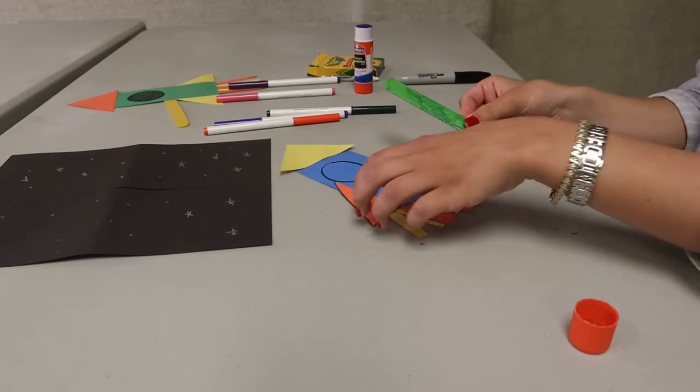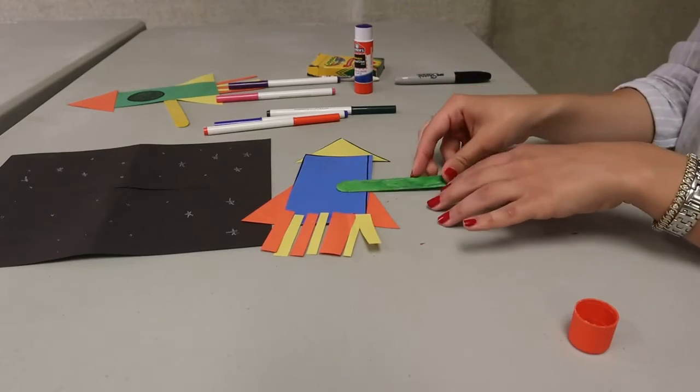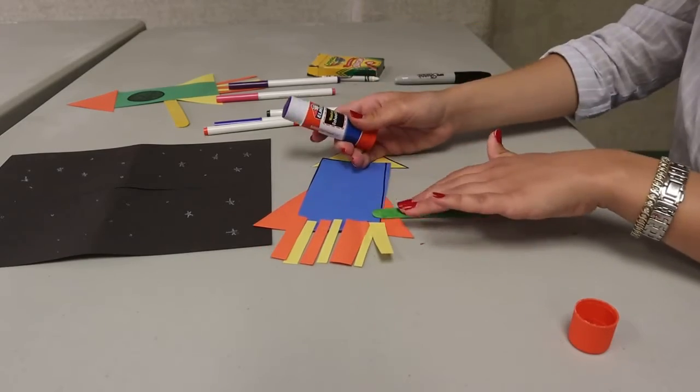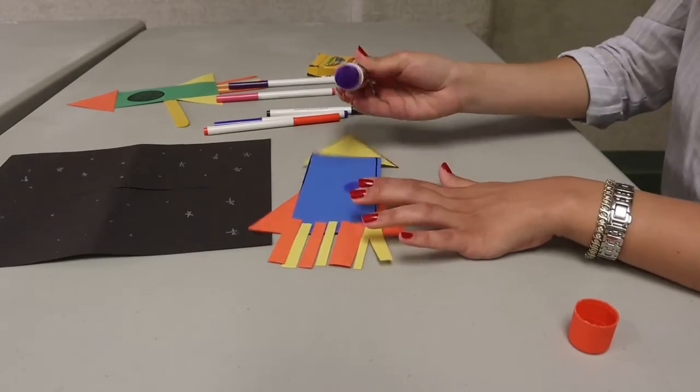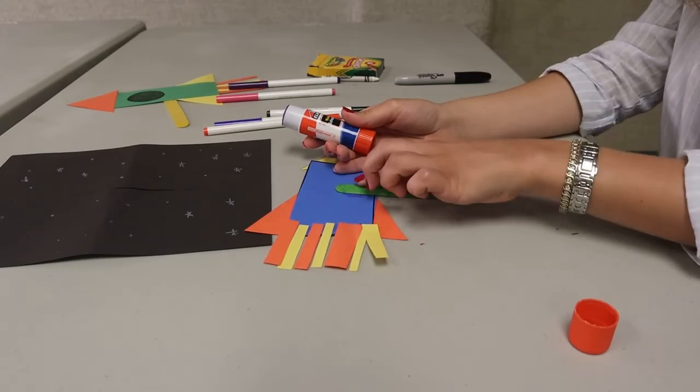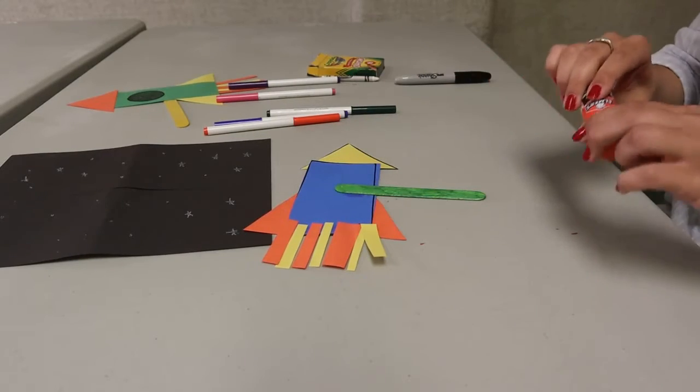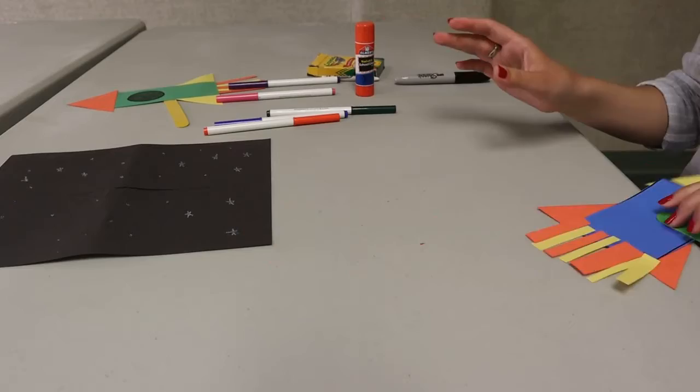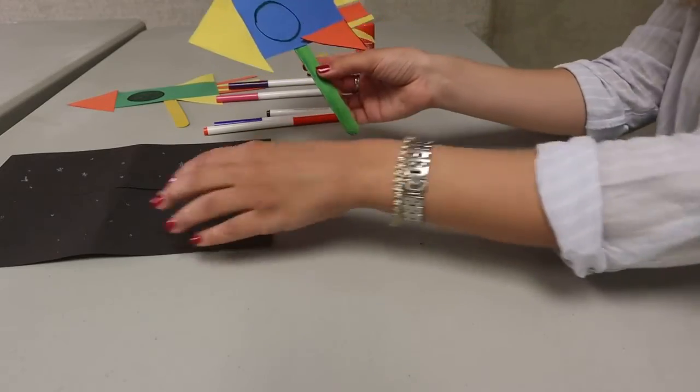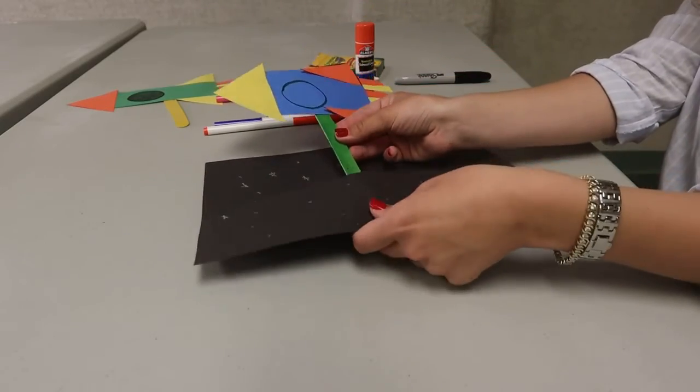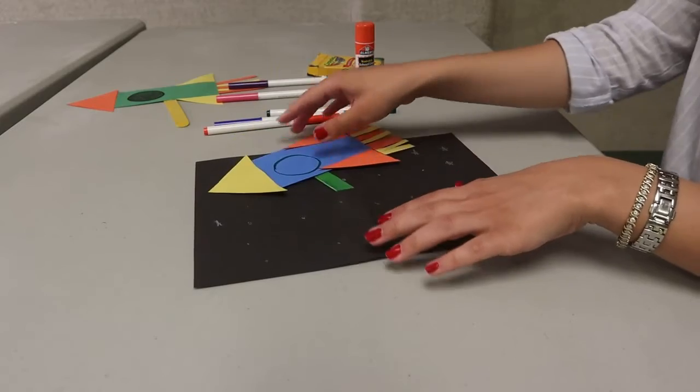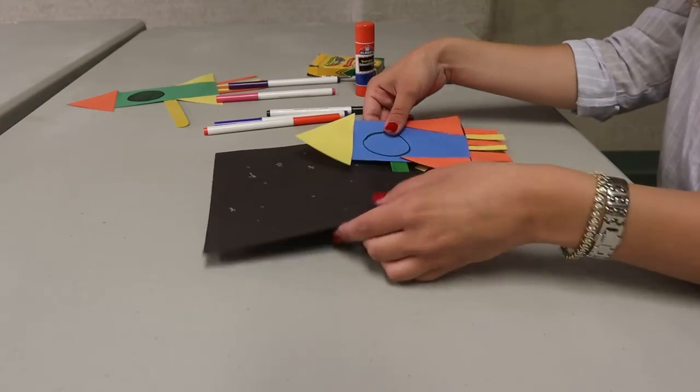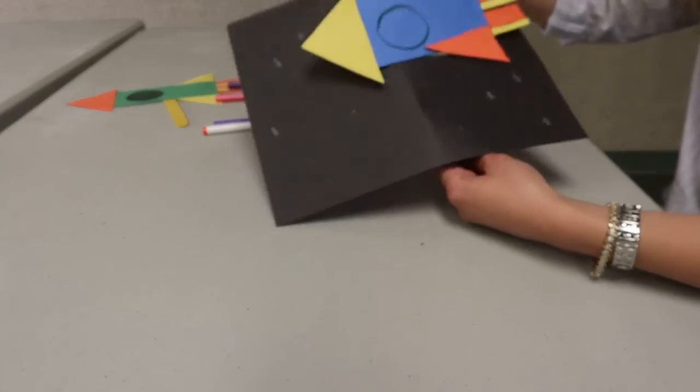And I'm going to take my craft stick or my popsicle stick and I am going to glue it to the back of my spaceship. So there we have our spaceship. I'm going to take that slit that I cut into the night sky and there's my spaceship go through the night sky.